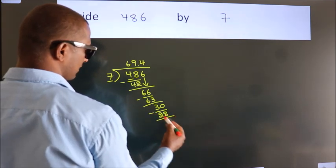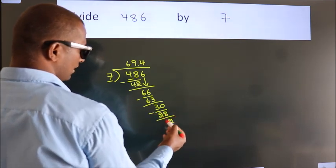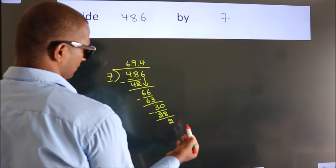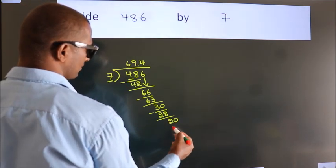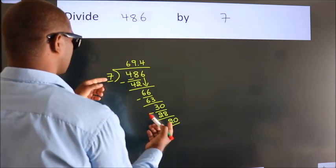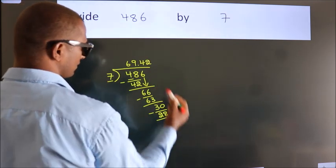Now, we subtract. We get 2. After this, we already have the decimal. So, directly take 0. So, 20. A number close to 20 in 7 table is 7, 2, 14.